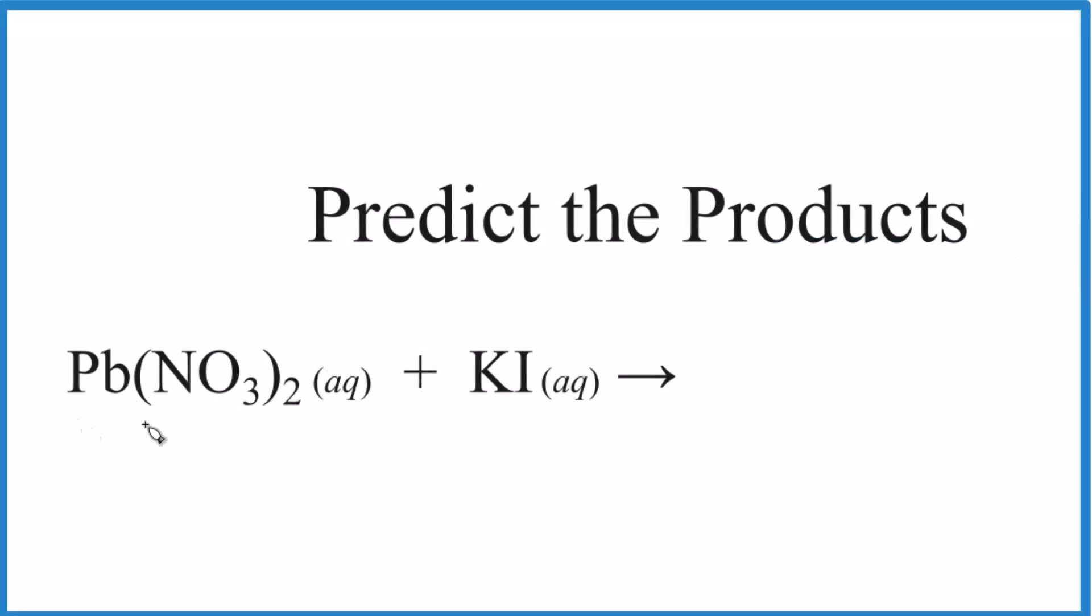Let's predict the products of lead 2 nitrate and potassium iodide. So when these two substances react, what do we end up with?